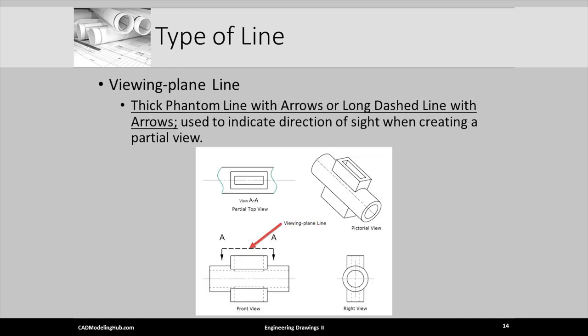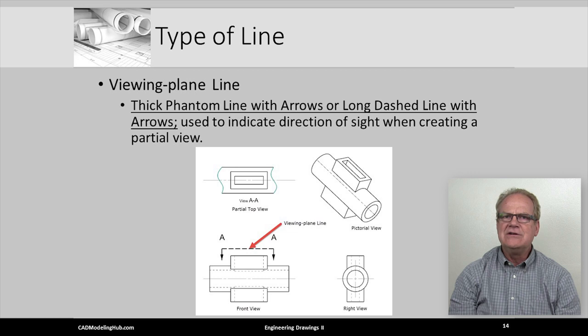The viewing plane line is, in appearance, a copy of the cutting plane line. However, its use is to indicate the direction and extents of the partial view being specified. Look at the figure. Notice how the top view is a partial view showing the rectangular feature and its opening that will need dimensioning.